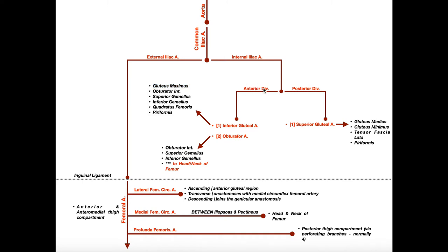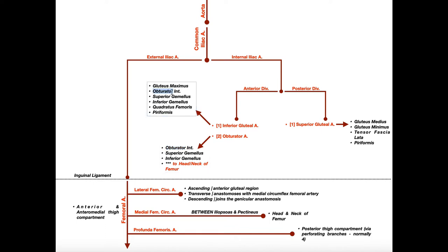Another branch of the anterior division of the internal iliac artery is the obturator artery. The obturator artery is going to supply the obturator internus and the two gemelli muscles. Notice there is some overlap between these two arteries — the superior and inferior gemelli are supplied by both the inferior gluteal artery and the obturator artery. Same thing with obturator internus, which is also listed above.